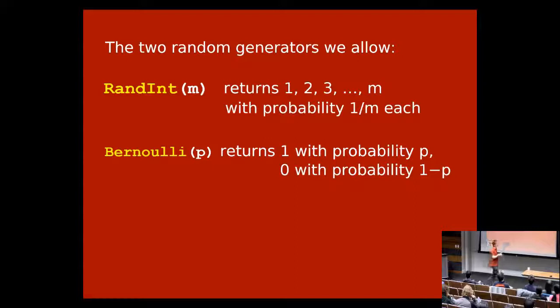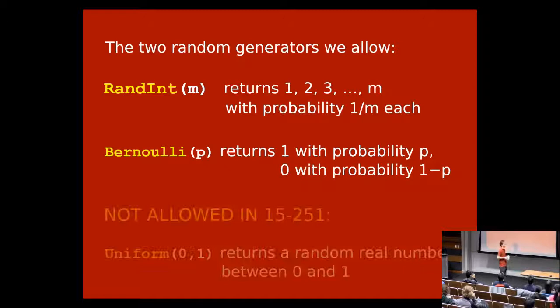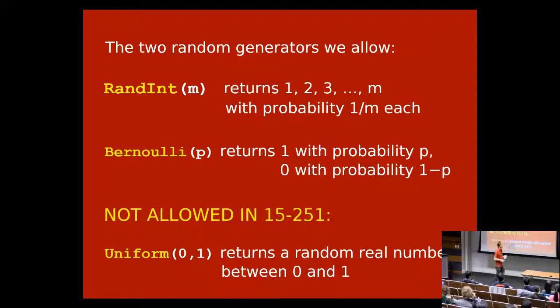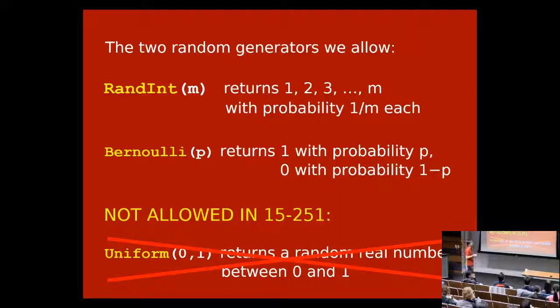To summarize: whenever we're doing probability in this class, if we start with a problem that's not about code, translate it into code. The code can have two kinds of random number generators: Randint(m), which returns 1, 2, 3 up to m with probability 1/m each; or Bernoulli(p), which returns 1 with probability p. Generating a random real number between 0 and 1 is not allowed in this course — real numbers have infinitely many digits and cannot be stored on a computer. These are the two random number generators we will talk about.